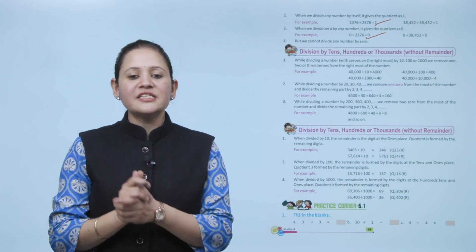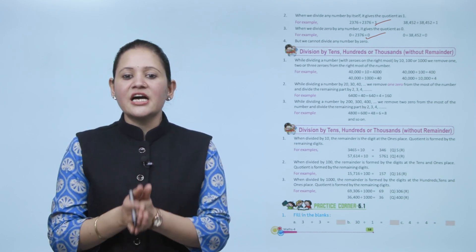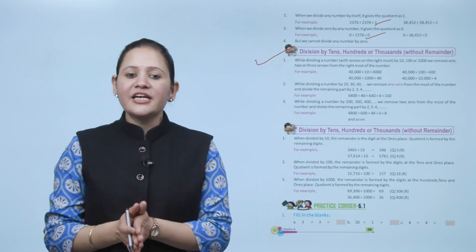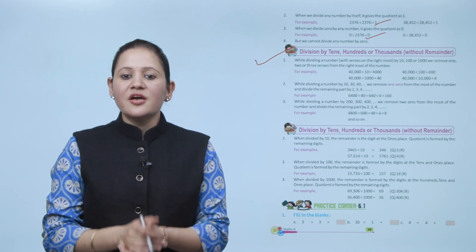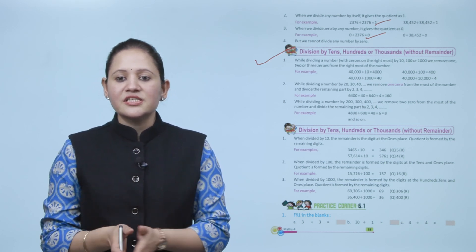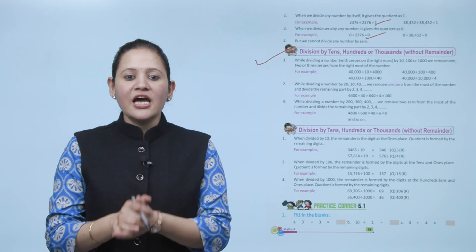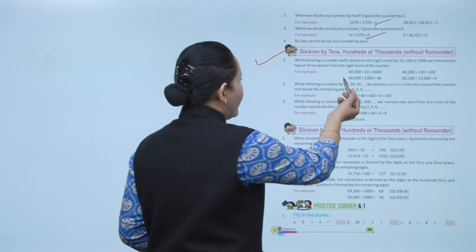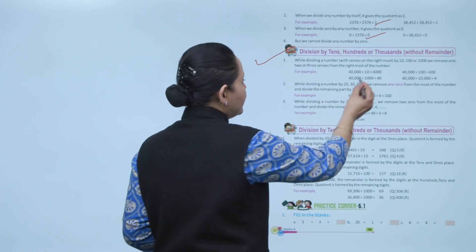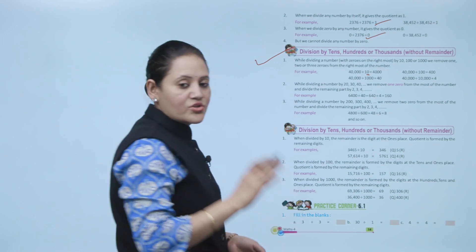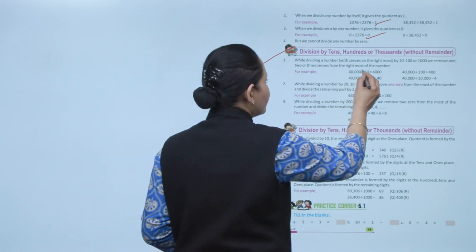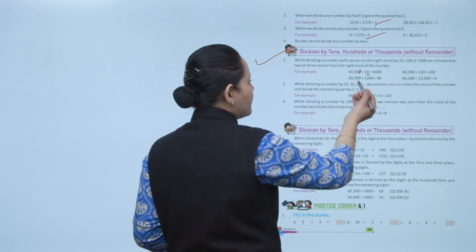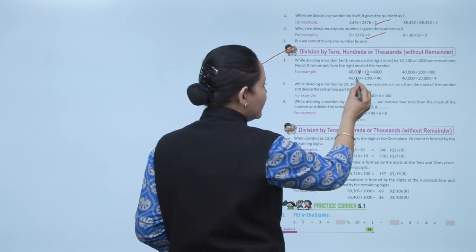Next is division of tens, hundreds, and thousands without remainder. While dividing a number with zeros on the rightmost by 10, 100, or 1000, we remove 1, 2, and 3 zeros from the rightmost of the number. For example, 40,000 divided by 10 — divisor has 1 zero, so remove 1 zero from the right, giving 4,000. 40,000 divided by 1,000 — remove 3 zeros, giving 40.